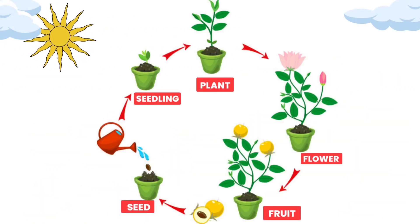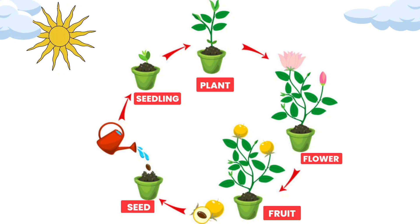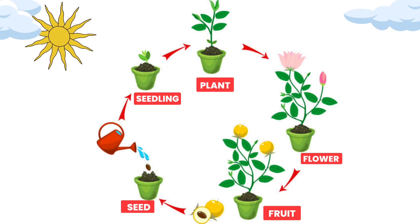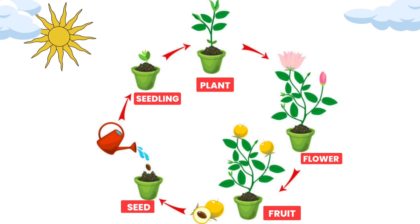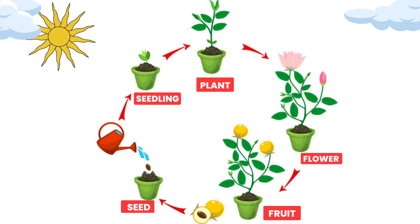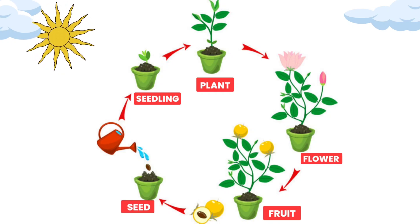Seed, seedling, plant, flower, fruit. This is the life cycle of a plant.